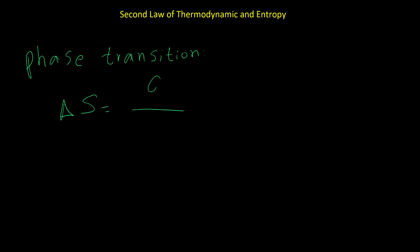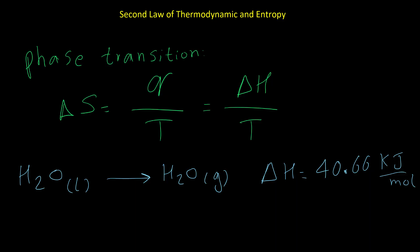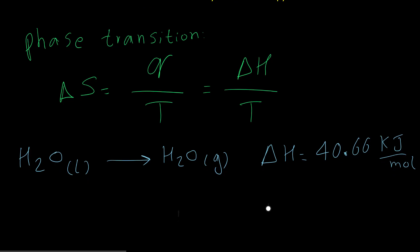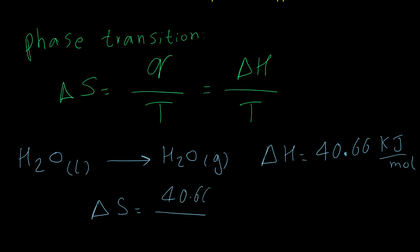For phase transition processes, with good approximation we can write delta S equals q over T, and q in phase transition normally is delta H. So let's have two examples for calculation of delta S for phase transitions. First example is evaporation of water at 100 Celsius. Delta H for this process is 40.66 kilojoules. Regarding to the equation, delta S equals 40.66 times 10 to the 3 over, keep in mind temperature should be in kelvin, so 100 Celsius